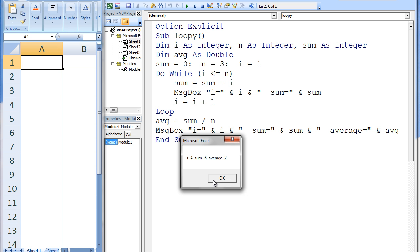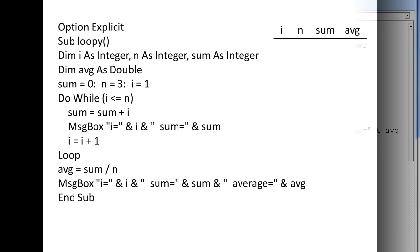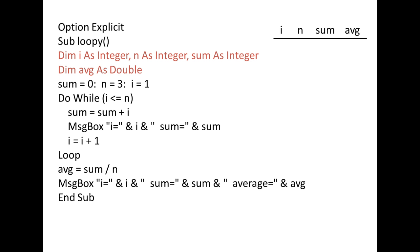Let's discuss why these message boxes display these particular values. The variables i, n, sum, and avg are declared and assigned a default value of 0. Next, sum is assigned the value 0, n is assigned the value 3, and i is assigned the value 1.